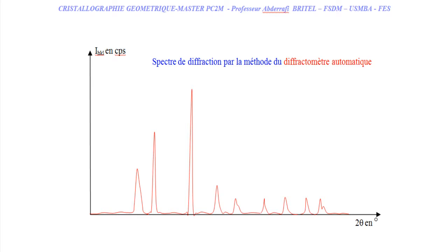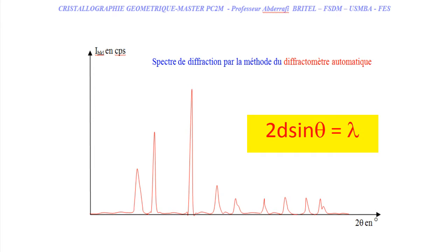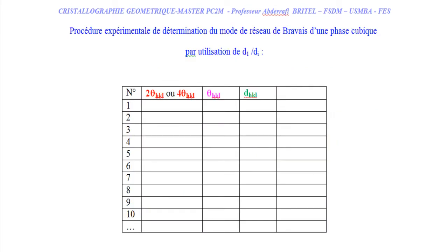This is what remains unknown, since we are still trying to determine the mode to identify the indexation. To address the problem of not knowing the diffraction order when calculating d, we consider that all experimental diffraction peaks each correspond to a given family diffracting at order 1. Therefore, for all diffraction peaks, the relation used is 2d sinθ = 1×λ, and the interplanar distance is obtained by d = λ / (2 sinθ).